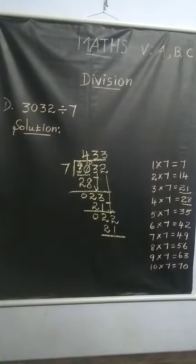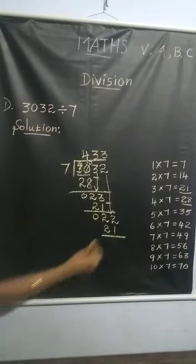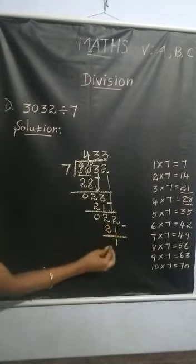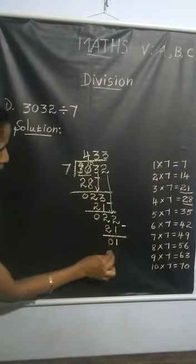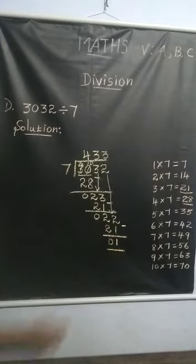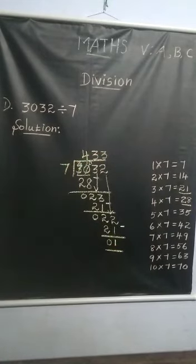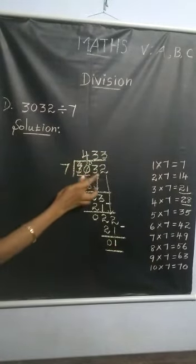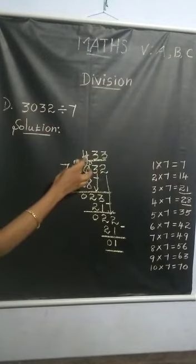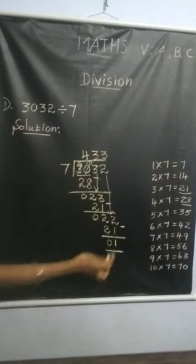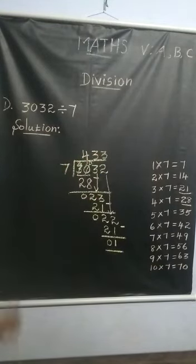What's the next step? Subtract. 2 minus 1 is 1. 2 minus 2 is 0. This is the remainder. 433 is the quotient. 3032 is the dividend. 7 is the divisor. 433 is the quotient, and 1 is the remainder.